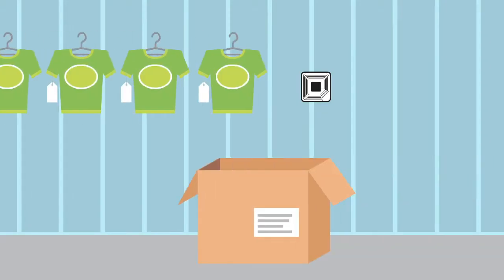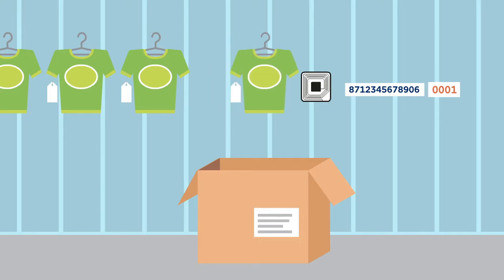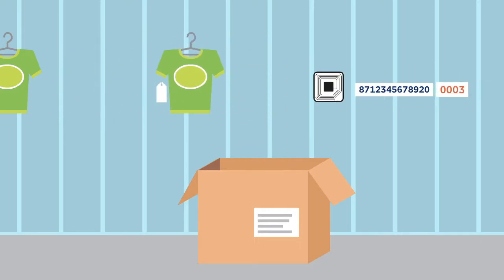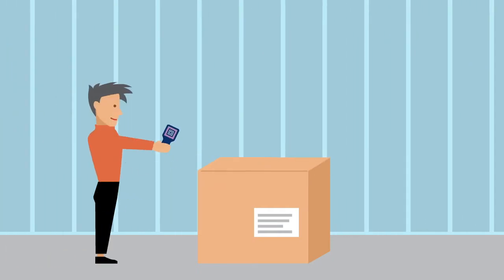On the RFID chip, a unique serial number is added to the EAN product code. This enables unique identification of every product. A scanner reads the information contained on the RFID chip from a distance.